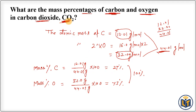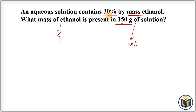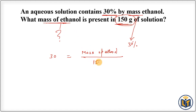The next problem states: an aqueous solution contains 30% by mass ethanol. What mass of ethanol is present in 150 grams of solution? The total mass of solution is 150 grams and we need to find the mass of the solute. Applying the formula: 30 = mass of ethanol divided by 150, multiplied by 100.